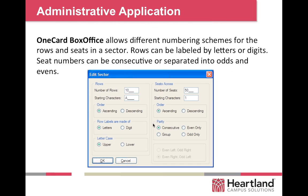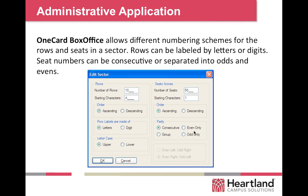OneCard BoxOffice allows different numbering schemes for rows and seats in a sector. You put in the number of rows and number of seats in each row, and this will create the floor plan for you automatically. You can label how seats are defined — are they letters for rows and numbers for seats, or all numbers? Which order? Whether there is consecutive seating or you have one sector that is even, one that's odd, or they're grouped in one fashion or another. You put in these parameters and it automatically creates the seating charts.